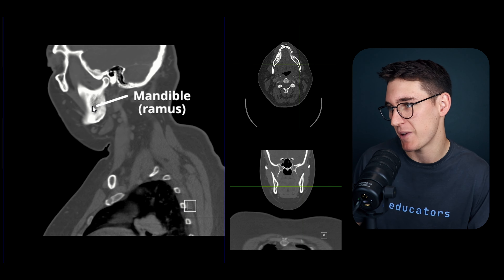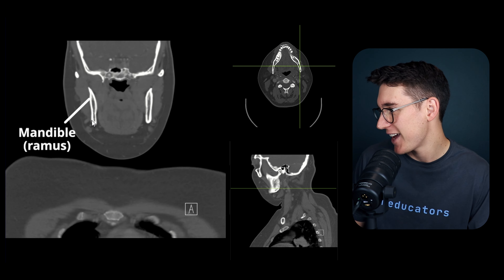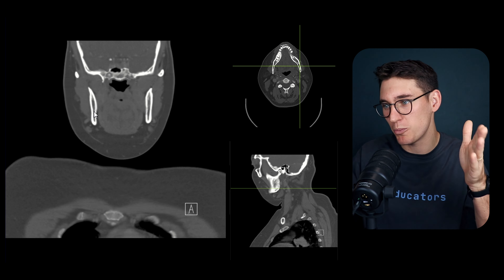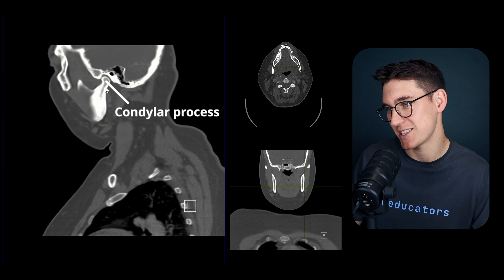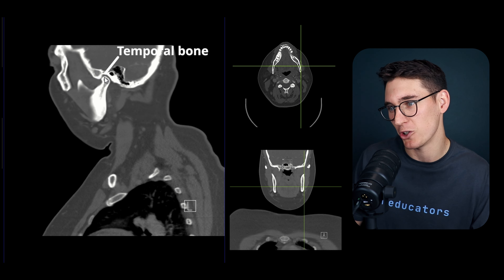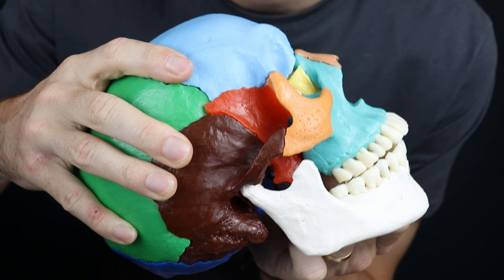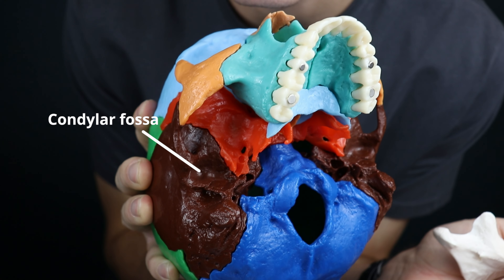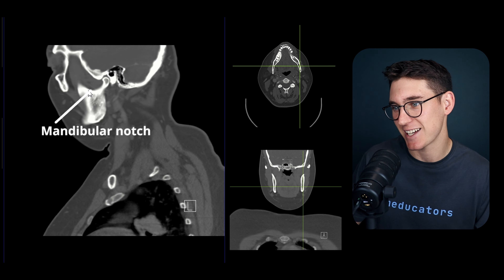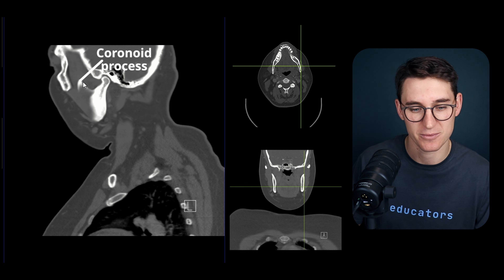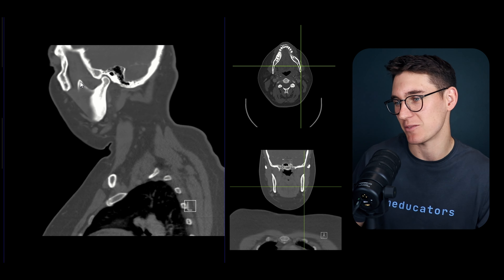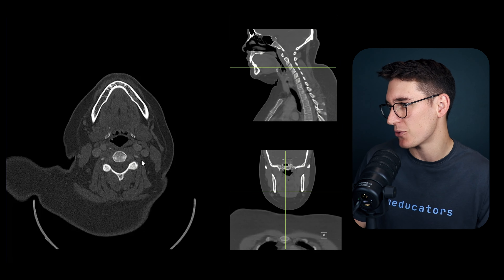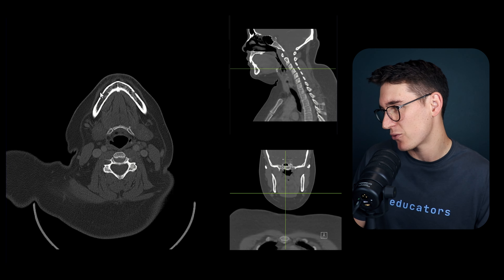The ramus is the vertical portion of the mandible, visible on our coronal scans heading from inferior to superior. The ramus extends superiorly into two processes: a condylar process with a neck and head that articulates with the condylar fossa of the temporal bone, and a coronoid process (separated by the mandibular notch). The coronoid process is an attachment site for the temporalis muscle - we'll examine this in detail when looking at muscles of mastication. Anteriorly on the body of the mandible there are small foramina on either side known as the mental foramina.